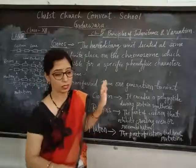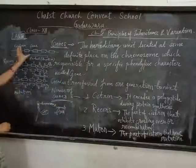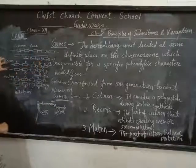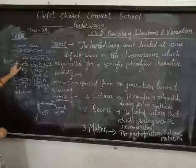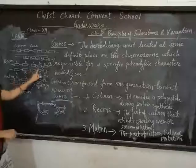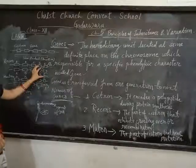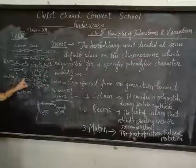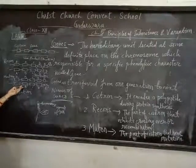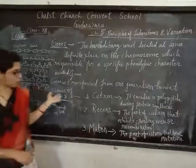So this is about the gene. Look at the diagram. This is the cistron that encodes protein. This is recon. Recon means these are the units of a gene, and here we have the crossing over taking place, so this part is called recon. Here, if mutation takes place and changes are put here, so this part is called muton. This is about the gene.